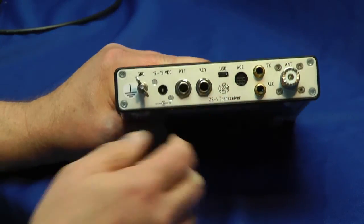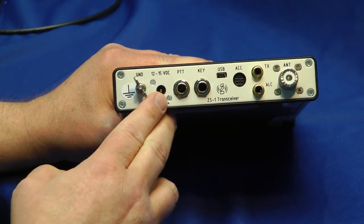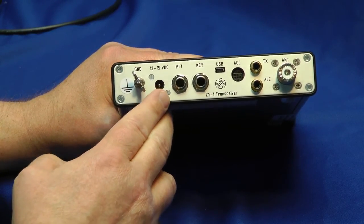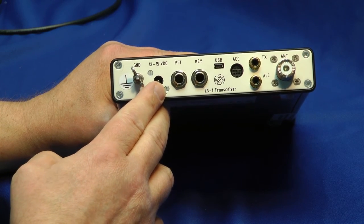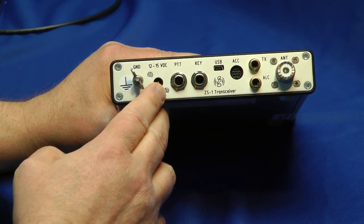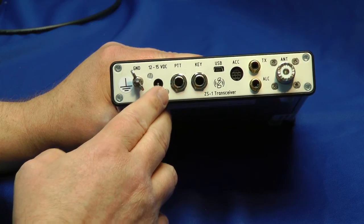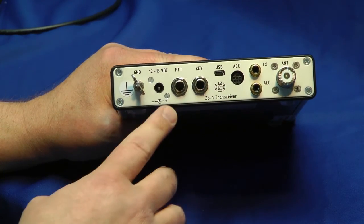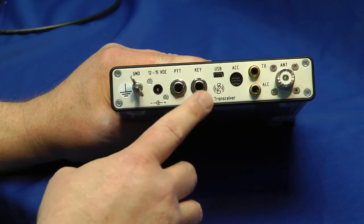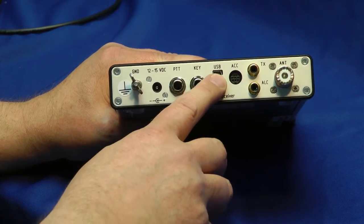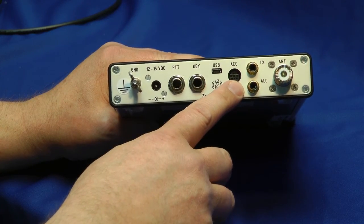We have ground connection, a DC power connection. You need about 4 amps DC power here, 12 to 15 volts, because this uses a little bit more power than a USB connection can provide. Push-to-talk line here, your Morse code key jack, USB connection for control, accessory lines.